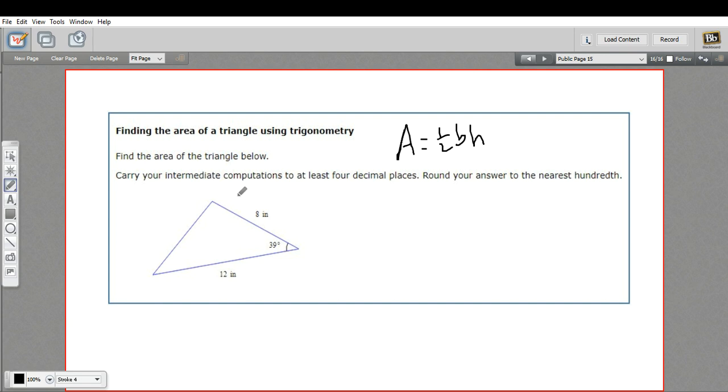So when you have a triangle that's not a right triangle, you drop an altitude. This is our height right here, but we don't know a measure for that. So how are we going to do this?